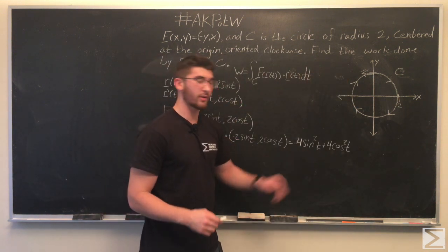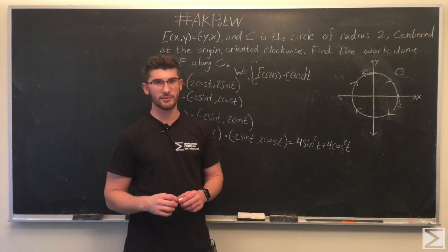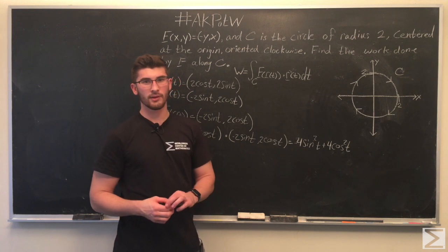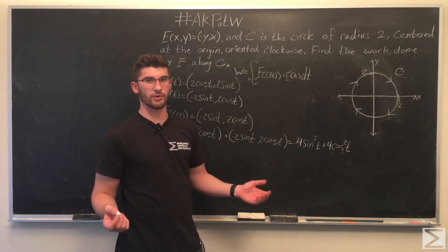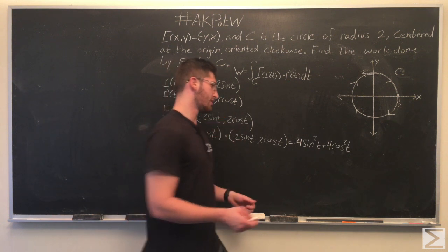So, when we dot these together, we get 4sin²(t) plus 4cos²(t). And if you remember your trigonometry rules and identities, then you know that this is equal to 4.